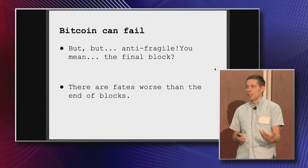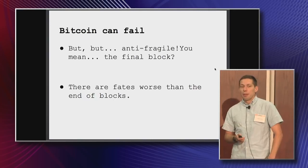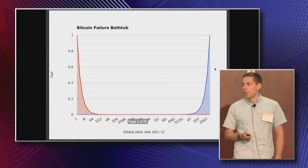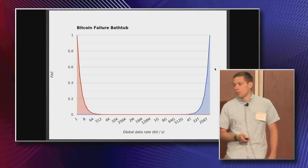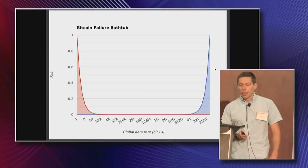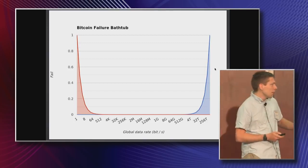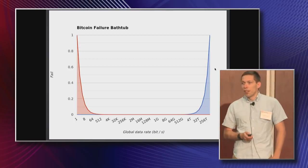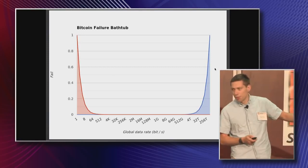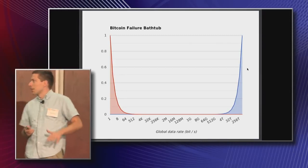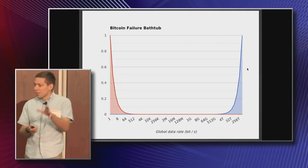But we should acknowledge that Bitcoin can fail. So am I talking about the final block of Bitcoin? What is the block height of the final block? There are maybe fates worse than a final block. So I have a Bitcoin failure bathtub, and I put some global data rate on the bottom, which is totally made up. But it fails on both sides — it can fail if you go too far in any direction. So there's a sort of Goldilocks zone or middle of the bathtub — there's a good place in the middle.